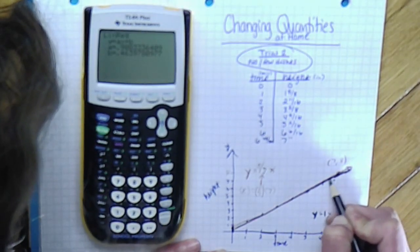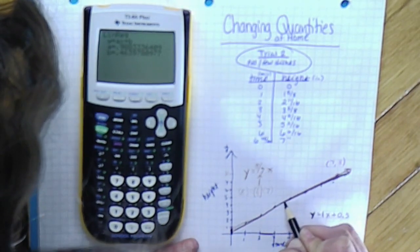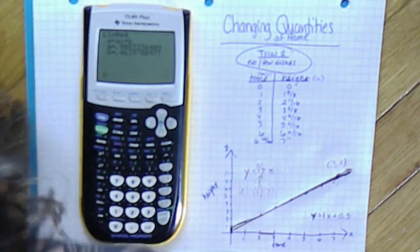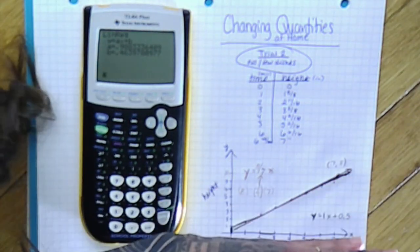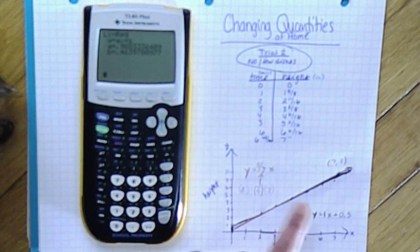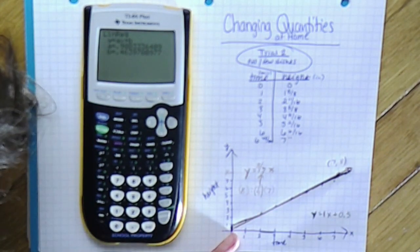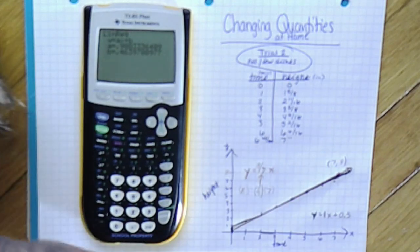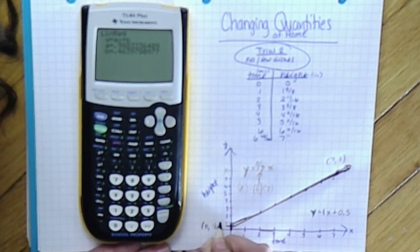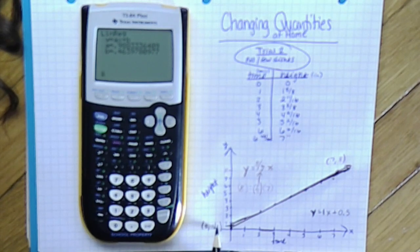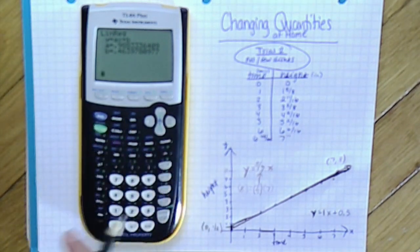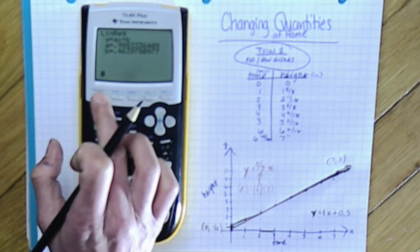So my line of best fit was pretty close to the one that the calculator created, except it has a shallower slope than mine. My slope was greater than one, this slope is less than one, and it shifted it up. It doesn't say that it starts at (0,0)—it says it starts at a y-intercept of 0.5, meaning that at zero minutes the sink had already filled half an inch.